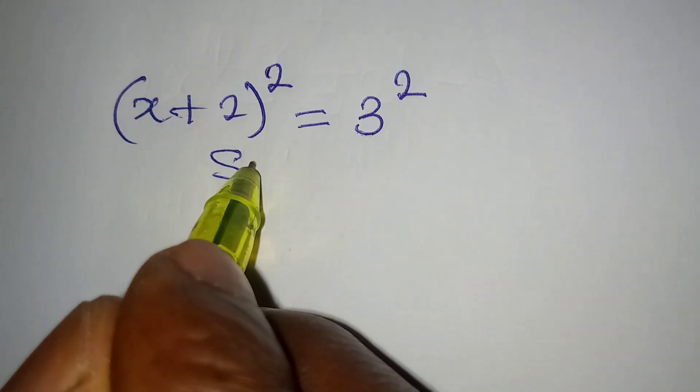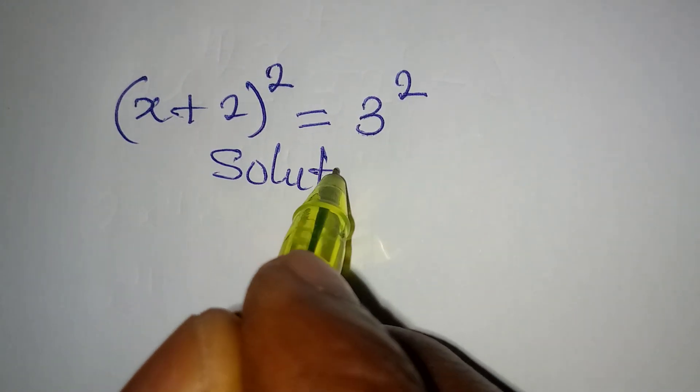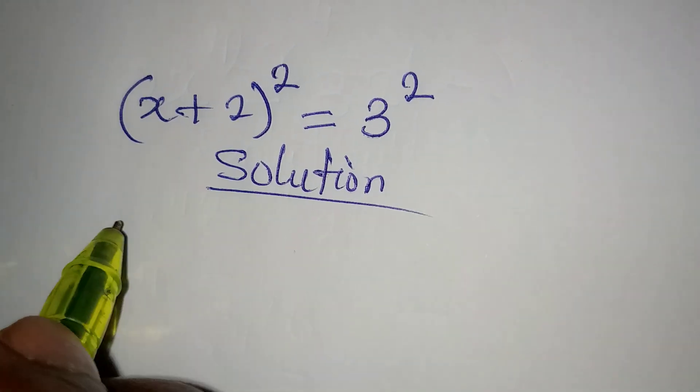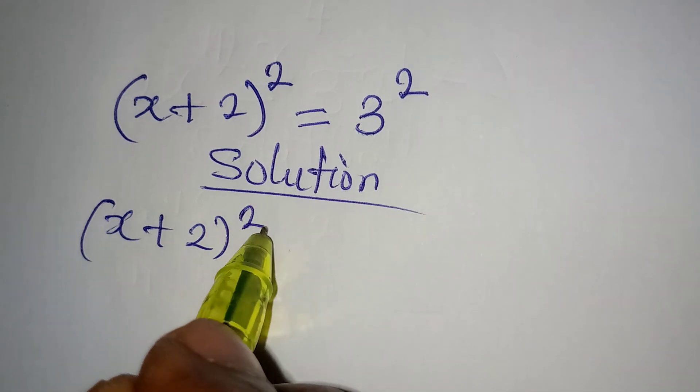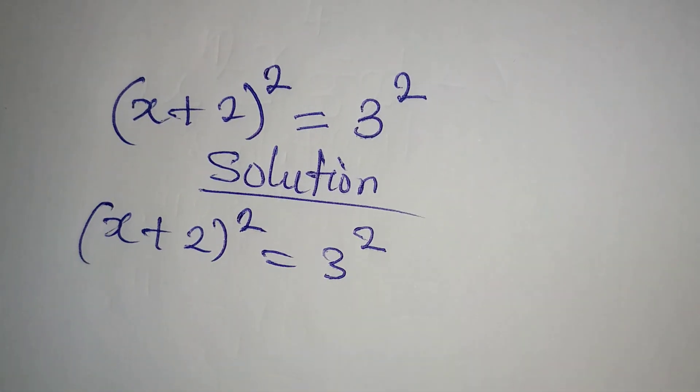Hello everyone, let us deal with this problem right away. We have x plus 2 to the power of 2 equal to 3 to the power of 2.